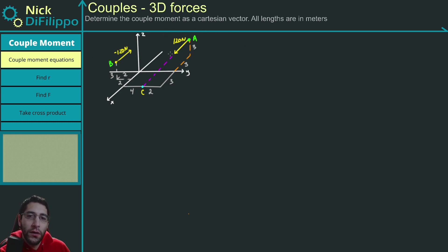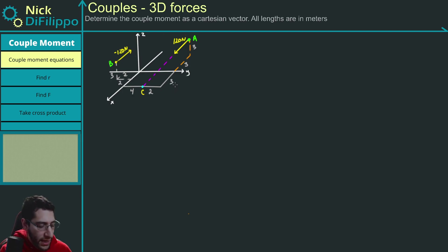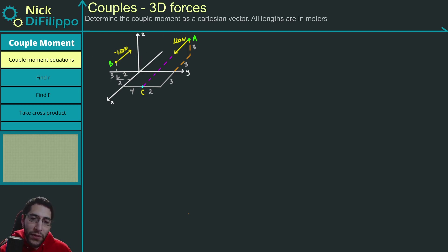In this problem, we have these two 120 Newton forces that are pointing in opposite directions. All of these numbers that you see are the locations of points A, B, and C — it's how we can figure out where those points are in space. All of these lengths will be in meters. The dotted line shows where this 120 Newton force is pointing along, and it shows that it will intercept at point C.